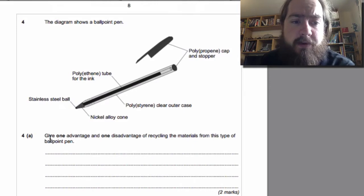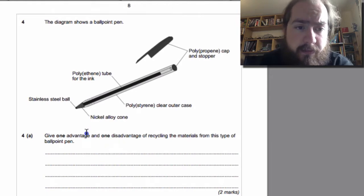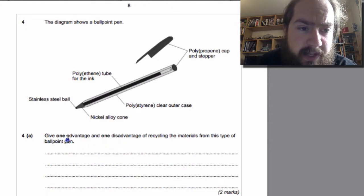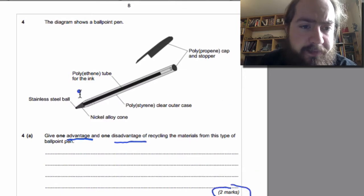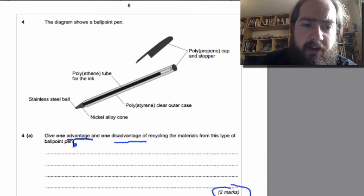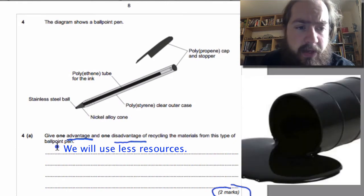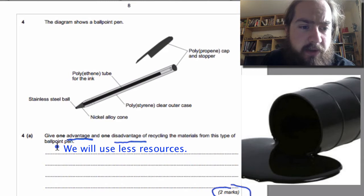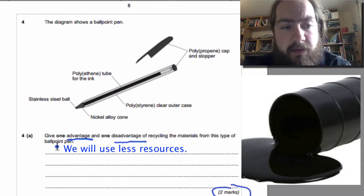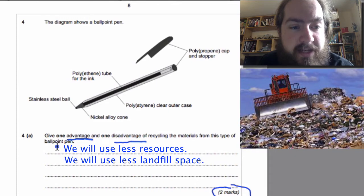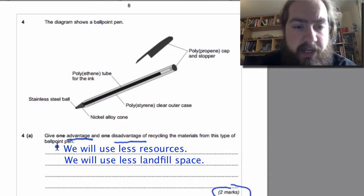For part A, give one advantage and one disadvantage of recycling the materials from this type of ballpoint pen. Remember, you need one advantage and one disadvantage. For two marks that's a mark each. Advantages: when you're recycling things we're going to be using less resources and that's going to save us things like crude oil. By recycling we could also save the amount of waste that goes into landfill, so use less landfill. Either of those will get you the mark.